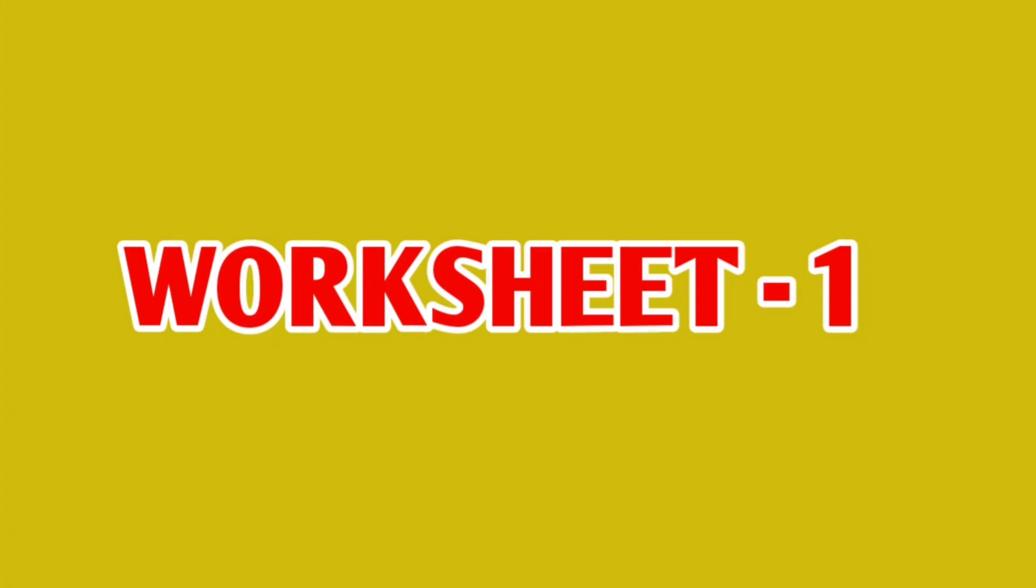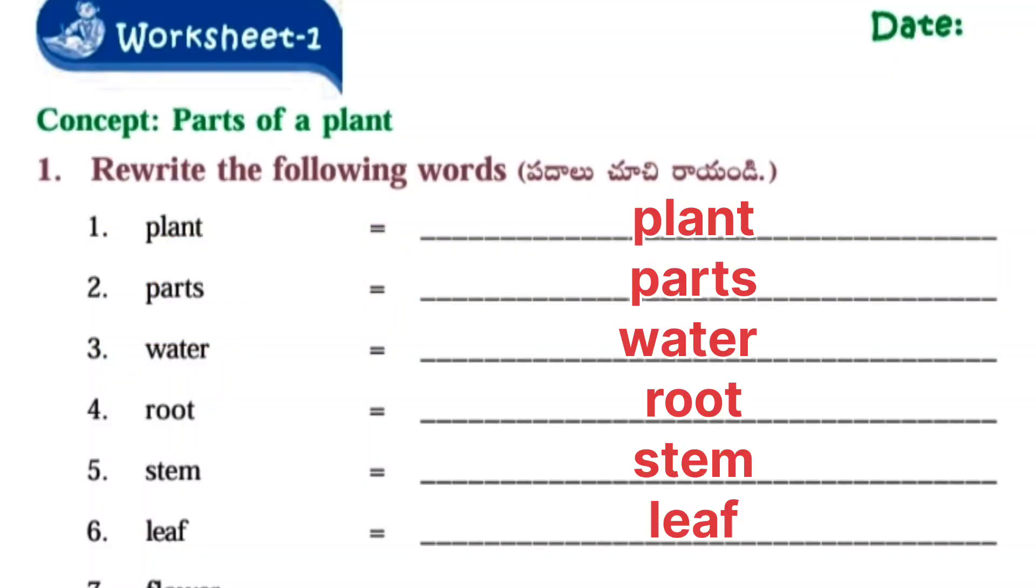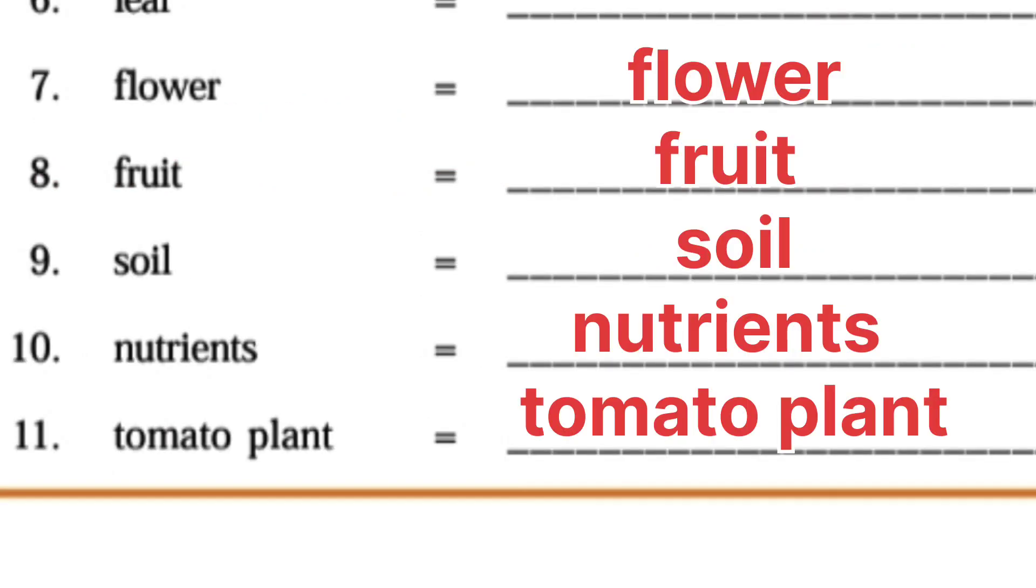Worksheet Number 1: Parts of a plant. Rewrite the following words: Plant, Pots, Water, Root, Stem, Leaf, Flower, Fruit, Soil, Nutrients, Tomato plant.